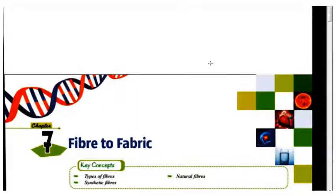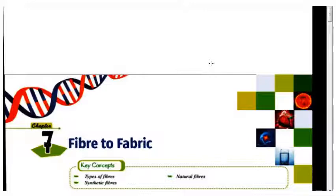Welcome back to our YouTube channel. Today we are going to discuss Chapter Number Seven of Class Six Science. The name of the chapter is Fiber to Fabric. We are going to discuss types of fibers — natural fiber and synthetic fiber.